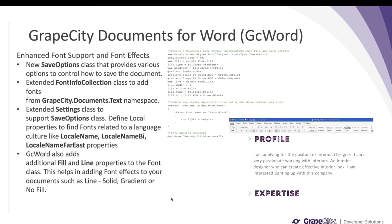In GcWord we have enhanced the font support and also added certain font effects, which will help you add these effects when generating Word documents. We have also added a new SaveOptions class that can help you control how to save the document with these fonts. We also extended the FontInfo collection class, which will help you add certain standard font forms from the GrapeCity.Documents.Text namespace — this will be an added advantage when generating a document. We also extended the Settings class to support the SaveOptions class.